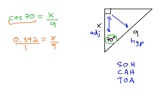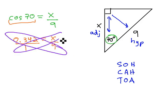Again, to make it a proportion so I can solve it, I always put that over 1, so we can multiply the diagonals. x times 1 is x, and 0.342 times 9 is equal to 3.08.